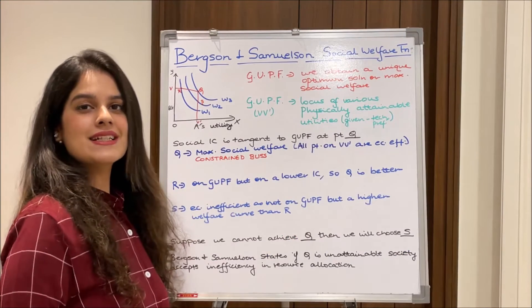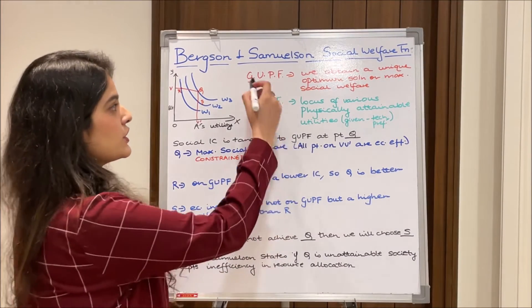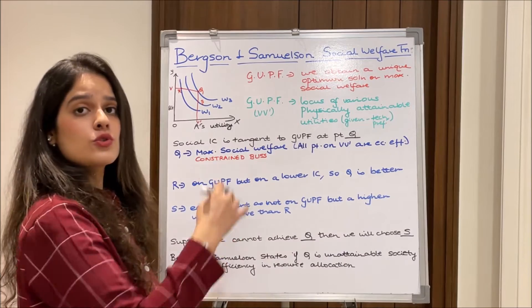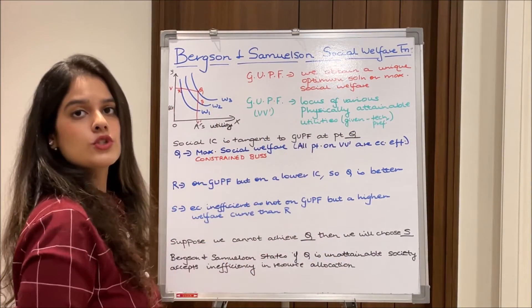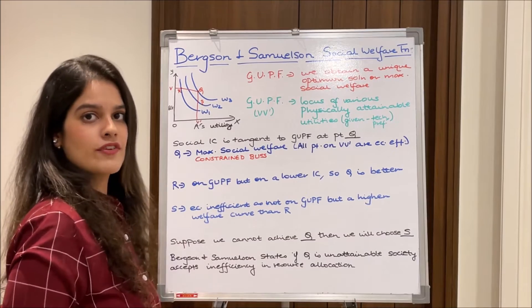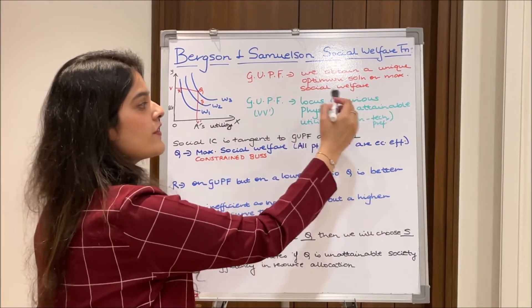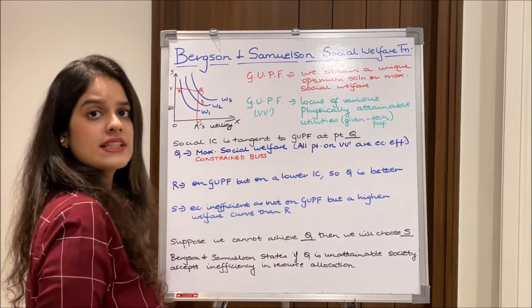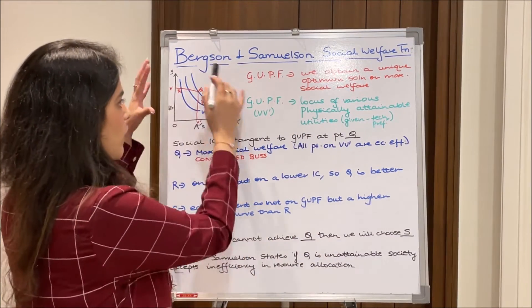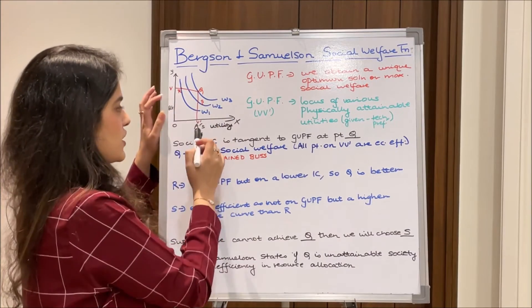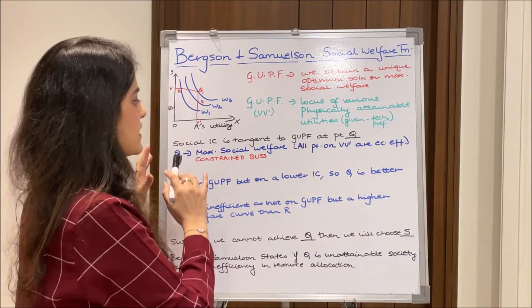Lastly, coming to the concept of the Grand Utility Possibility Frontier — GUPF. Through the usage of GUPF, we obtain a unique optimum solution, or the maximum social welfare. It is the locus of the various physically attainable utilities given the technology and the state of preferences. On our graph, VV' — the line in red — is our GUPF.